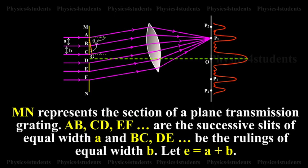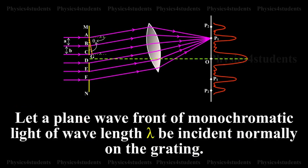MN represents the section of a plane transmission grating. A, B, C, D, E, F are the successive slits of equal width A, and B, C, D, E are the rulings of equal width B. Let E equal A plus B.